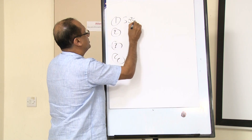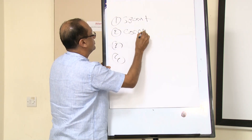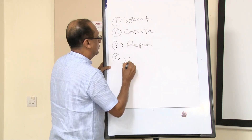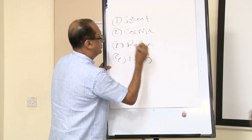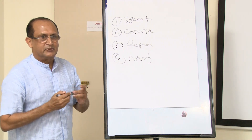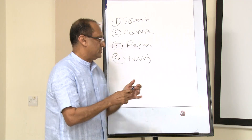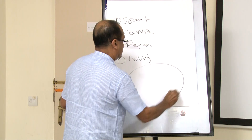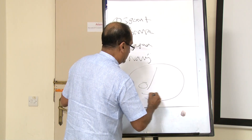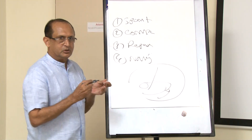The four components are: one, spontaneous speech; two, comprehension; three, repetition; and four, naming. These four components will give you an idea of what type of aphasia the patient has — whether anterior aphasia, posterior aphasia, or conduction aphasia.